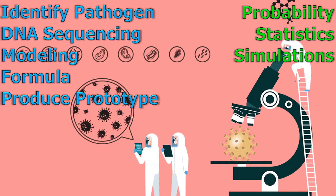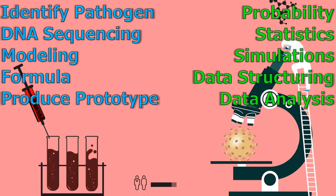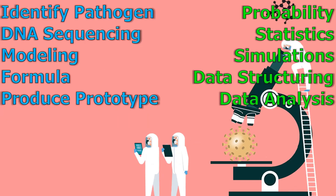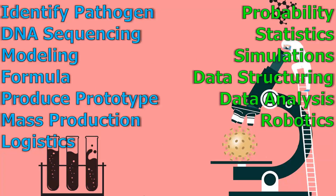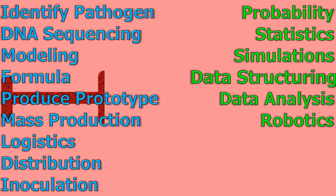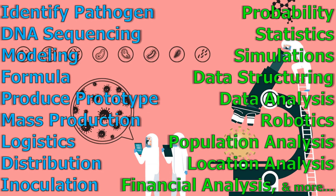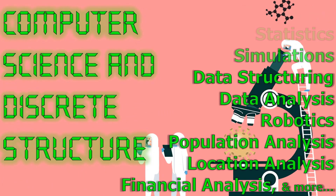After the vaccine prototype is produced, you'll then need to create a database for the prototype test results and do data analysis to determine how effective the vaccines are, and guide you if more research and improvement is needed or if you are ready to go live. All of this, of course, is driven by computer science and discrete structure. Then there's the mass production where robotics might be involved, the logistics distribution, and the actual inoculation which involves more data analysis, bigger data structures, population data analysis, location analysis, financial analysis, and more — all organized and running under the reliable hands of computer science and discrete math structure.